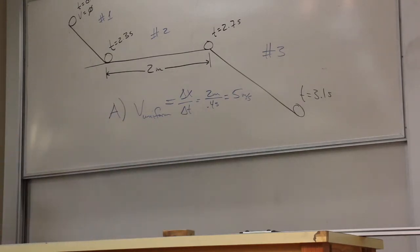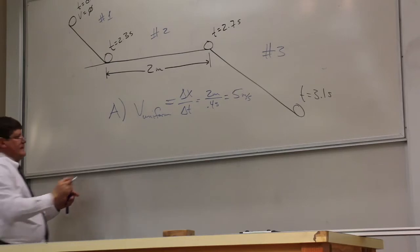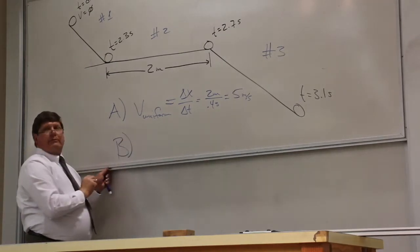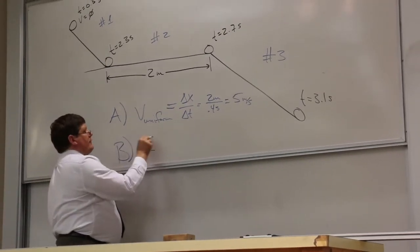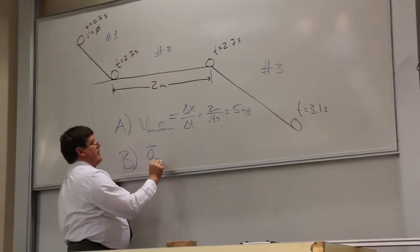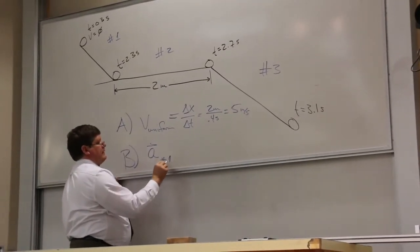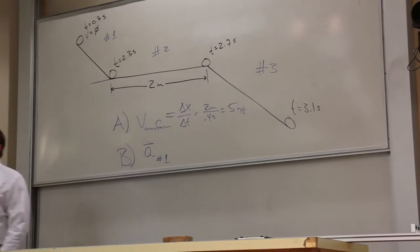That's not why this problem got voted off the island. This was voted off the island because of part B, where you're asked to find the acceleration on track number one, and you want the magnitude and the direction.